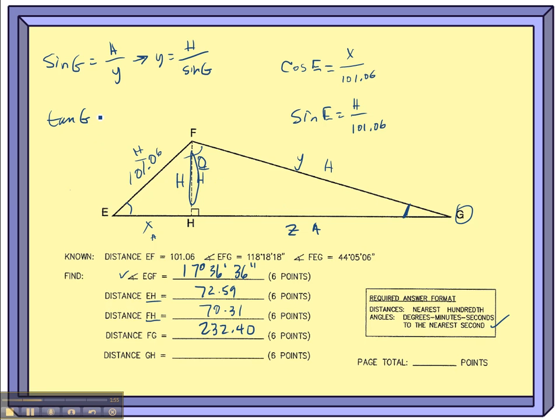That's the tangent ratio. So tangent of G equals the opposite side, which is H, stored in my calculator, over Z, which I'm trying to find. Notice that this looks like the same kind of equation. I'm going to switch these things out again. I'm going to have H divided by tangent of G this time.